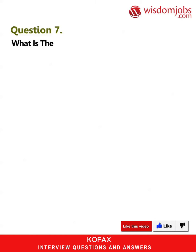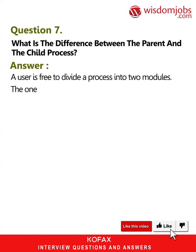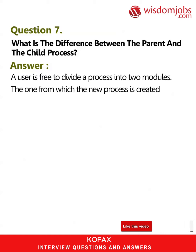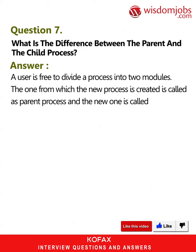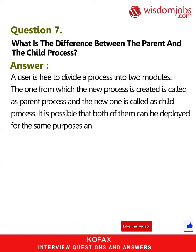Question 7: What is the difference between the parent and the child process? A user is free to divide a process into two modules. The one from which the new process is created is called the parent process, and the new one is called the child process. It is possible that both of them can be deployed for the same purposes and can have similar properties.